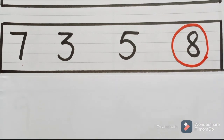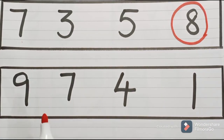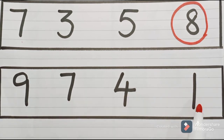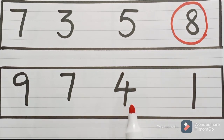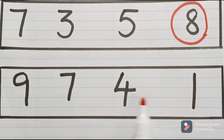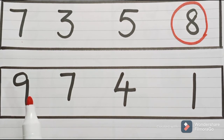Circle the number 8. In the next row we have numbers 9, 7, 4, and 1. Which number comes earlier? It is 1. After 1, 4 comes; after 4, 7 comes; after 7, 9 comes. Out of these four numbers, the biggest number is 9 — this is the greatest — so we have to circle this number.